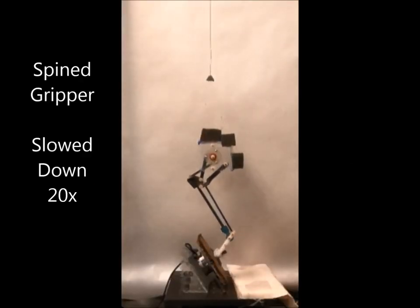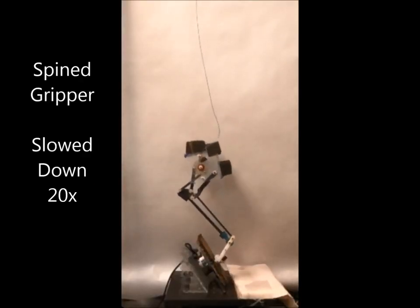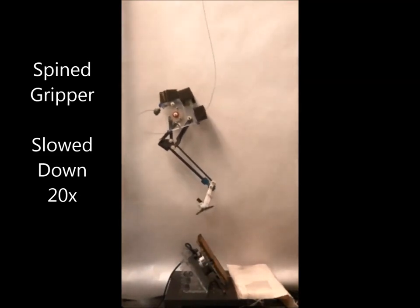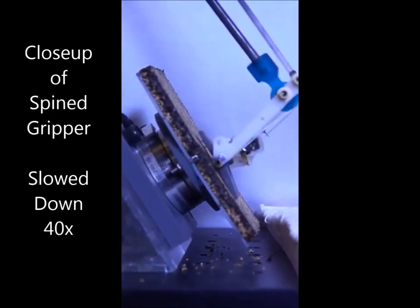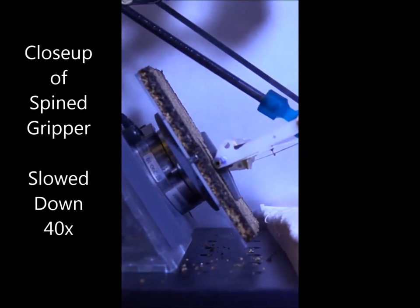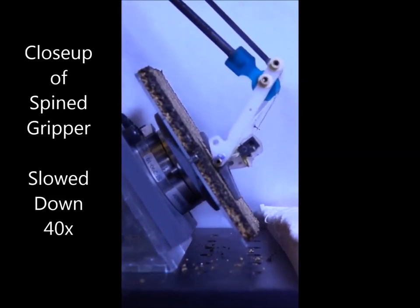The spined gripper rebounds off a 60 degree cork incline. The gripper dwells as it crouches, and disengages as it uncrouches.